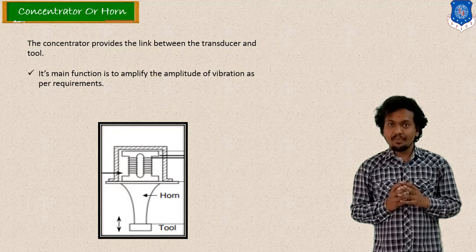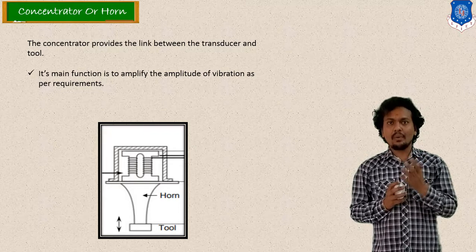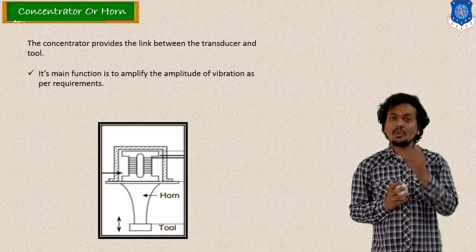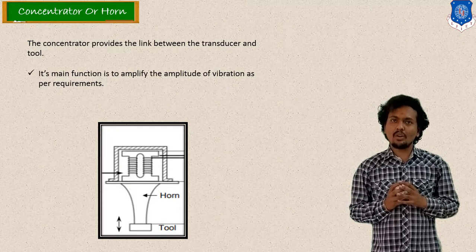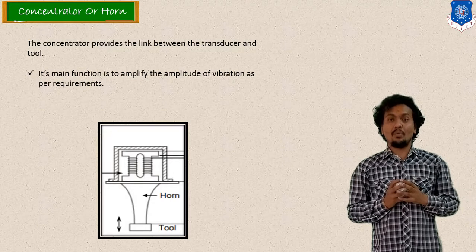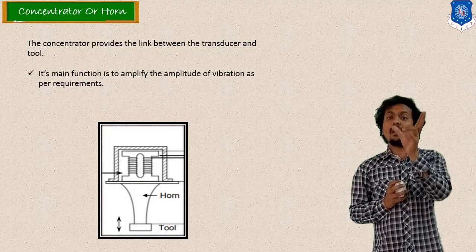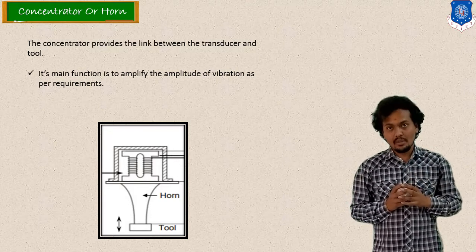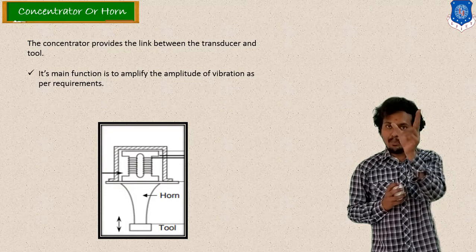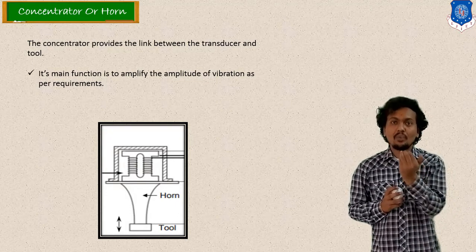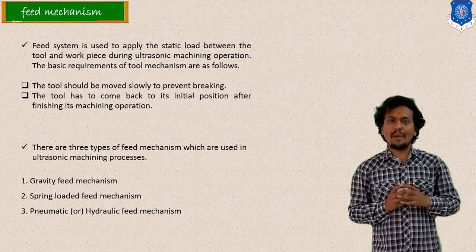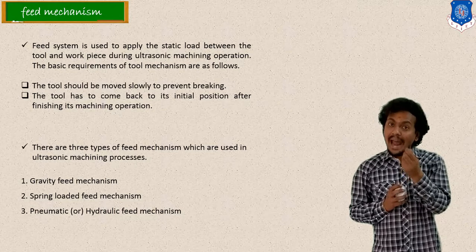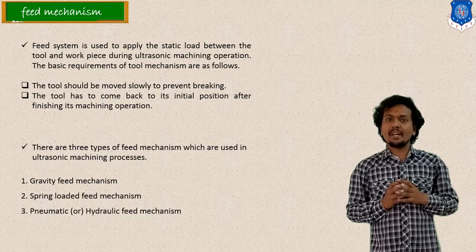After that, here I mentioned the concentrator or say horn mechanism. So as per the name, the function of concentrator is to magnify the vibratory motion or say to enhance or increase the amplitude of vibration. So concentrator or horn is used to increase the amplitude of vibration. Here I mentioned the image — it is having a conical shape, and the tool is provided at the end of this shape that is concentrator or horn. So the purpose of concentrator or horn, as per the name, is to concentrate the vibration or to increase the amplitude. In ultrasonic machining, it is very important to provide the high frequency vibration at the end of the tool, and that's why horn or concentrator is important.